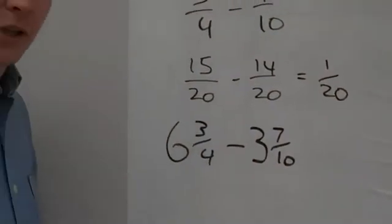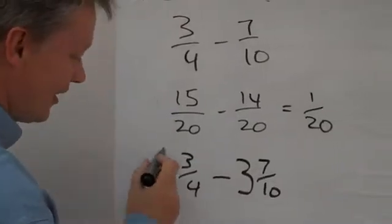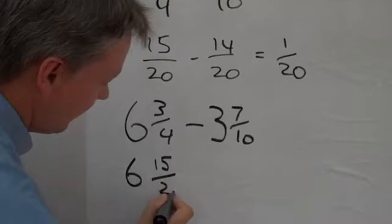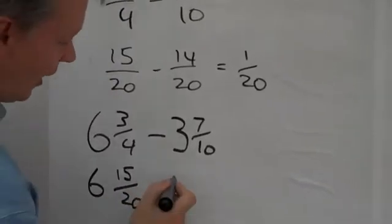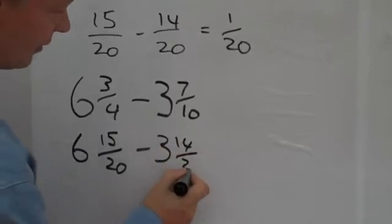Well, again, we're going to make sure that the denominators are exactly the same. So six and three quarters is six and fifteen twentieths, take away three whole ones and fourteen twentieths.